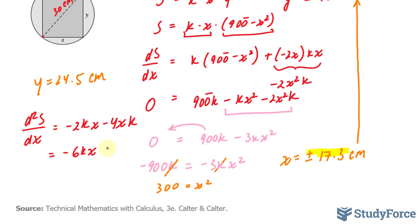Negative 6kx. And when x is equal to 17.3, substituting this number into here will give us a negative value. A negative output means there is a maximum at 17.3 width. Therefore, 24.5 is the correct depth that will maximize the strength.